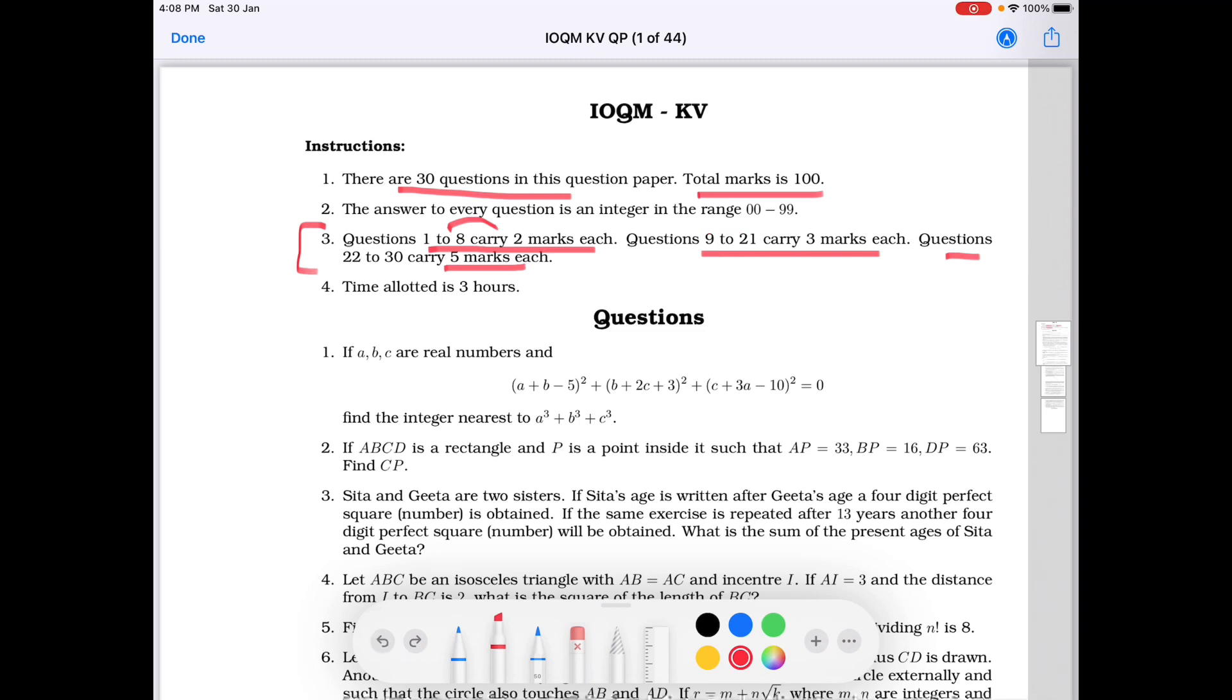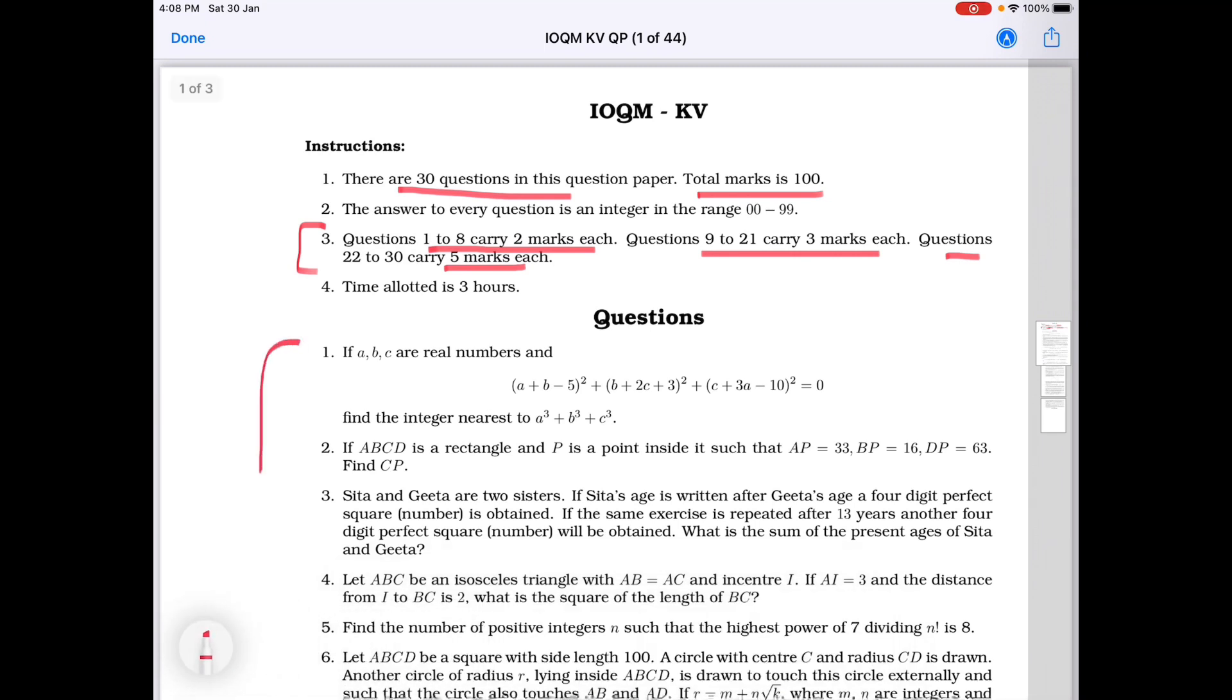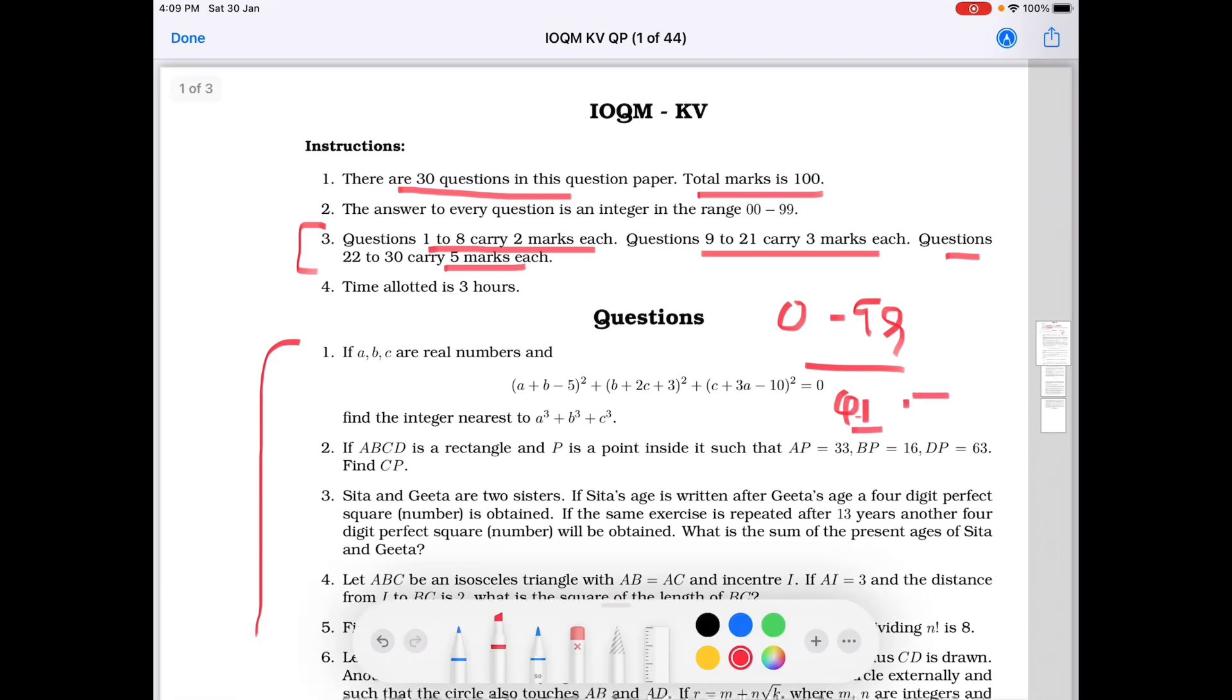Second instruction is, the answer to every question is an integer in the range 00 to 99. It means final answer of all the questions lies between 0 to 99, and you have to fill the 2 digit answer in the OMR sheet. Pattern of OMR sheet is like this - Question 1 and here are 2 blank boxes. You have to write your 2 digit answer in this box. And below these boxes, there are 10 circles containing 0 to 9 digits, and you have to fill the circle containing same digits.